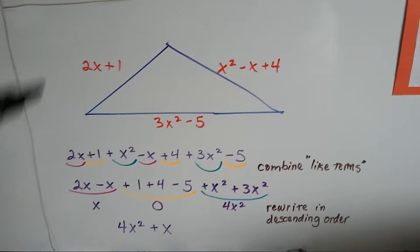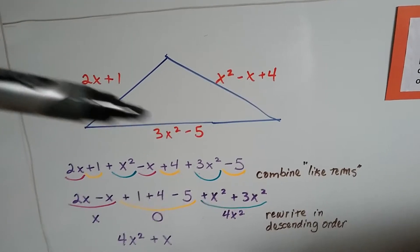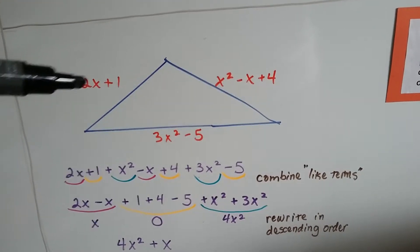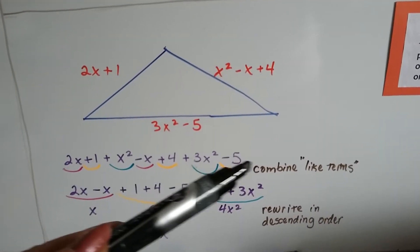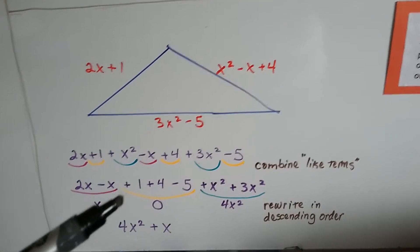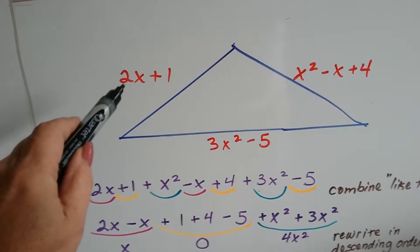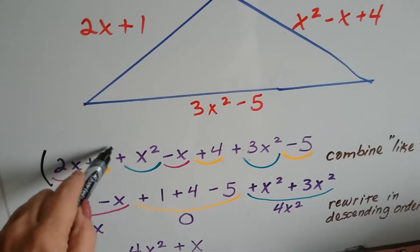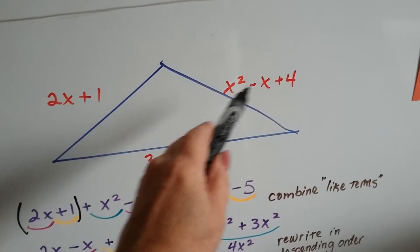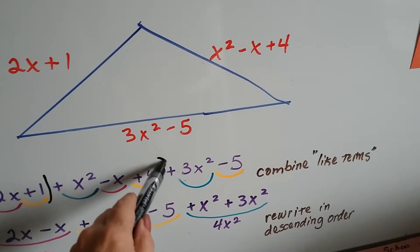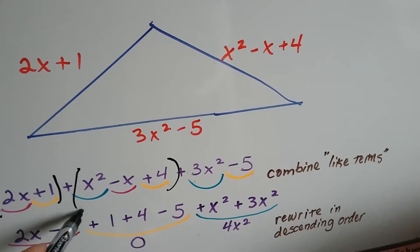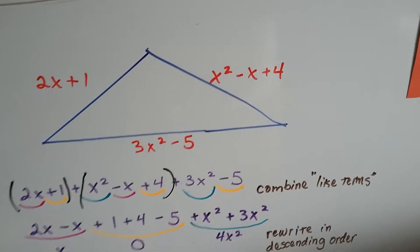And even if we have a triangle and it's got all these binomials or polynomials going around it, we can write them all in one big long sentence with a plus sign in between each one. Because if you look, see this one? It's right here. And this one right here, x squared minus x plus 4, that's right here. And then here's this one, this final one.